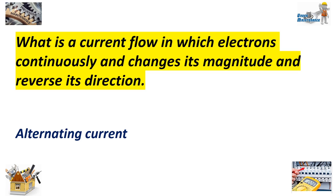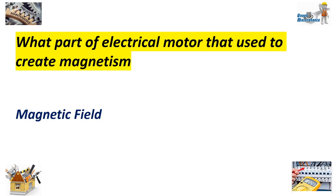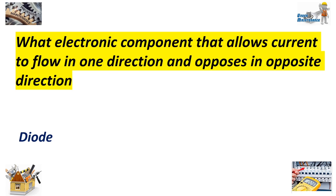What is a current flow in which electrons continuously change its magnitude and reverse its direction? Answer: Alternating current. What part of electrical motor that is used to create magnetism? Answer: Magnetic field. What electronic component allows current to flow in one direction and opposes in opposite direction? Answer: Diode.